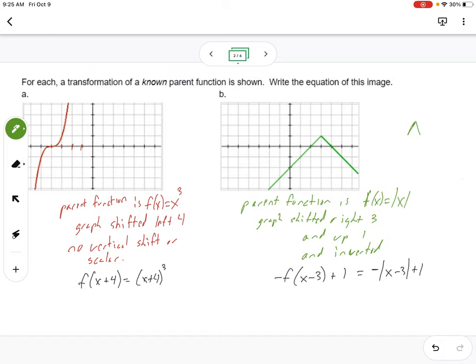So that should indicate to us that when we have a V function, this is an absolute value function. So we know that our function, the parent function, is F of X is equal to the absolute value of X.